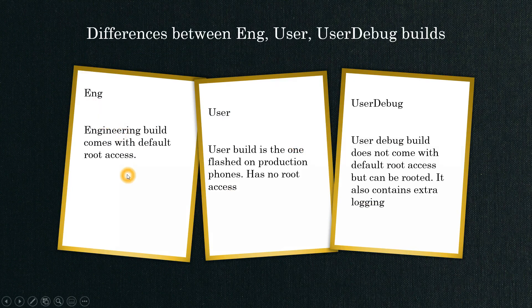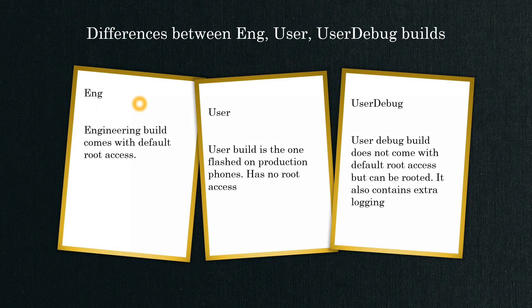Engineering build comes with default root access. This is basically used by developers when they develop code and want to try it — they need not follow the extra steps of signing that particular code and then installing on a user build. They can test their code right then and there. Root access means the user has permission to access any system resources, any file system, without any extra permissions needing to be granted.